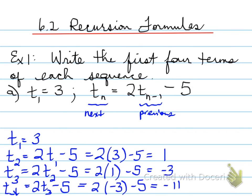When I ask you to write the first four terms of each sequence, I want you to write a therefore. Therefore, the sequence is 3, 1, negative 3, and negative 11. That's your sequence. Part B.